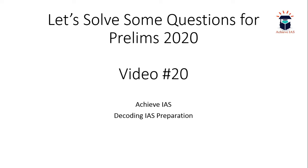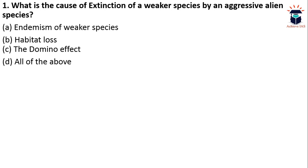The first question is: what is the cause of extinction of a weaker species by an aggressive alien species? A) Endemism of weaker species. B) Habitat loss. C) Domino effect. D) All of the above.